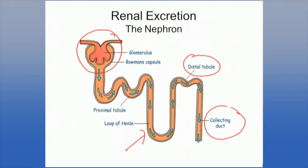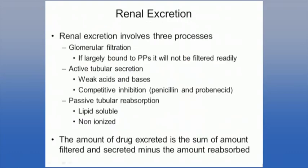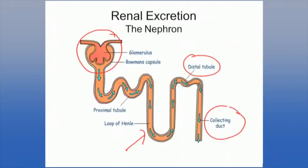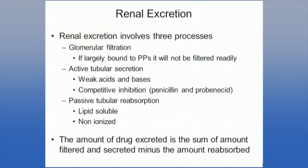So how does drug excretion work at the nephron? It involves three different processes — a combination, or possibly only one, depending on the drug. The first is glomerular filtration: the drug gets delivered to the glomerulus through the blood supply and is filtered through the glomerulus into the tubule for excretion. If the drug is largely bound to plasma proteins, it is not filtered readily because it's too large to pass through the glomerulus.